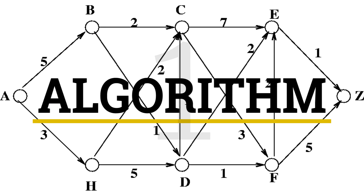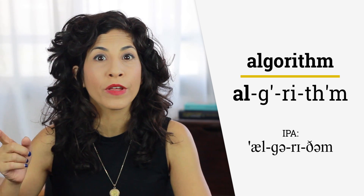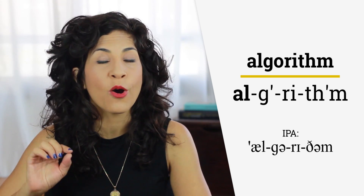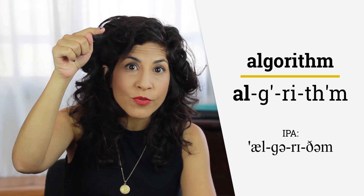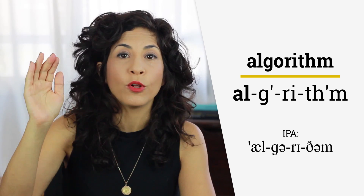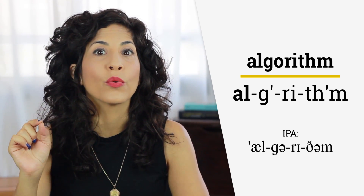Algorithm. Notice it's not 'algorithm' — there is no O. It's 'A' as in cat, with primary stress on the first syllable: algorithm. And don't forget to stick the tongue out for the TH.